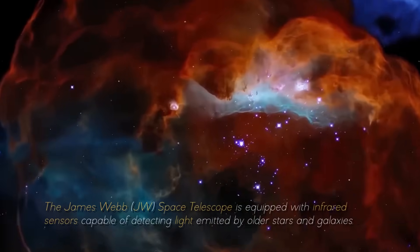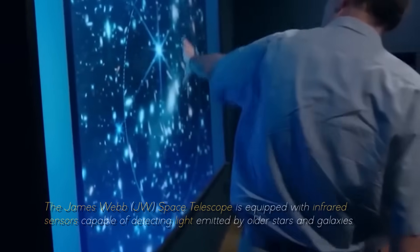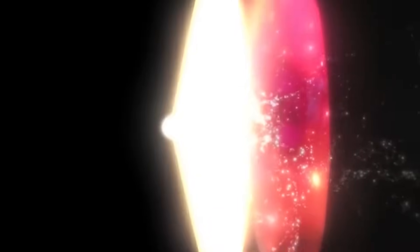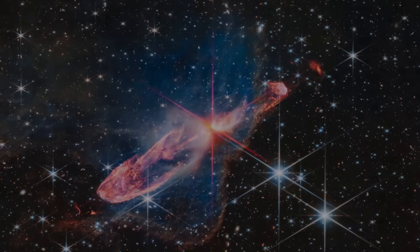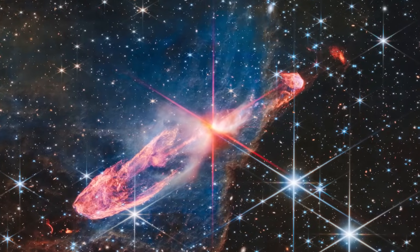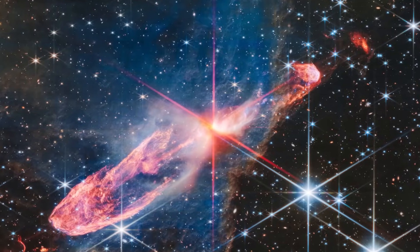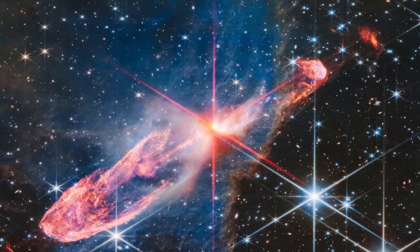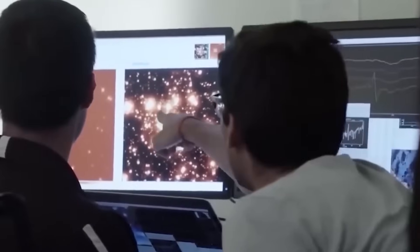The James Webb Space Telescope is equipped with infrared sensors capable of detecting light emitted by older stars and galaxies. This allowed astronomers to go back in time, almost 13.5 billion years, to the beginning of the known universe. Prior to this discovery, scientists had detected numerous galaxies in the oldest regions of the universe approximately 350 million years after the Big Bang. These distant stellar systems were small and in agreement with the predictions of current cosmological models.